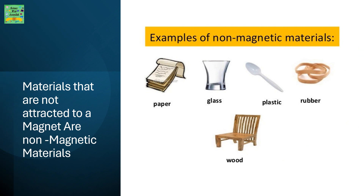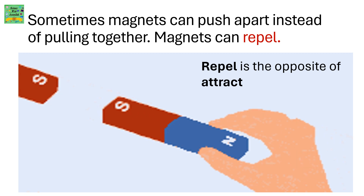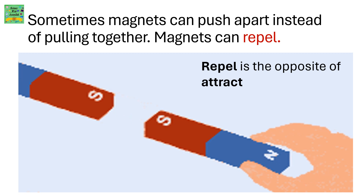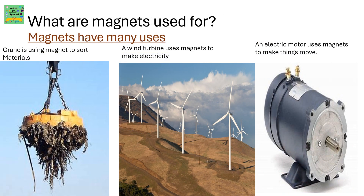Materials that are not attracted to a magnet are called non-magnetic materials. Examples of non-magnetic materials are paper, glass, plastic, rubber, and wood. Sometimes magnets can push apart instead of pulling together — magnets can repel. Repel is the opposite of attract.